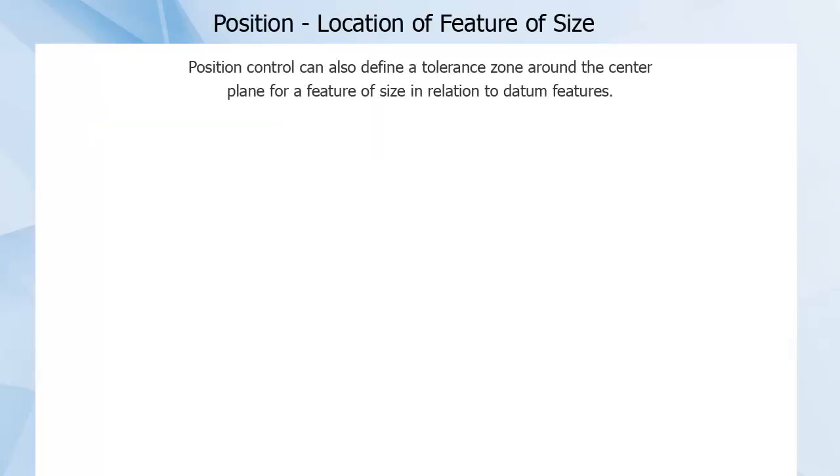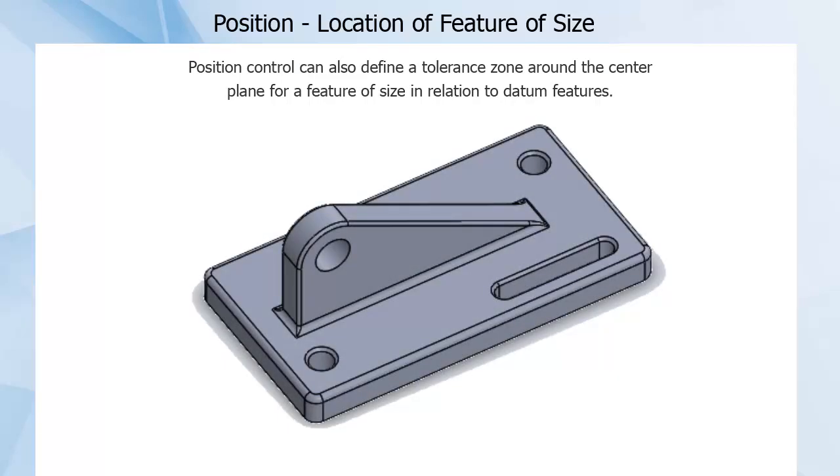Position control can also define a tolerance zone around the center plane for a feature of size in relation to datum features. Our demo for this section has a raised fin or tab, and a slot, which are both features of size that are non-diametric. As you'll see, tabs and slots are positioned by their derived median plane.